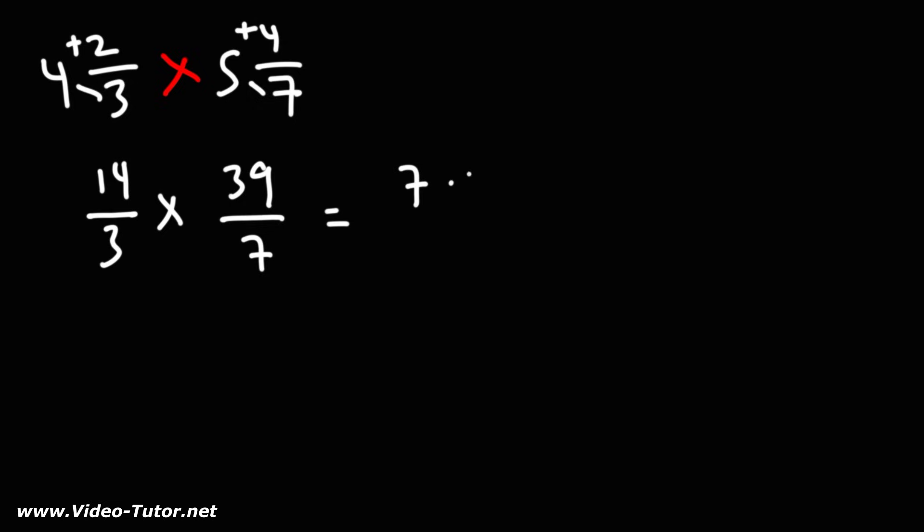14, I'm going to write that as 7 times 2. 3, I'm going to write that as 3 times 1. 39 is 13 times 3, and 7, I'll leave that as 7 times 1. So we could cancel a 7 and we could cancel a 3.